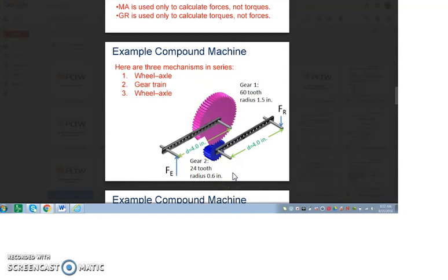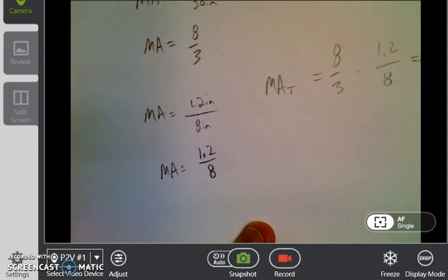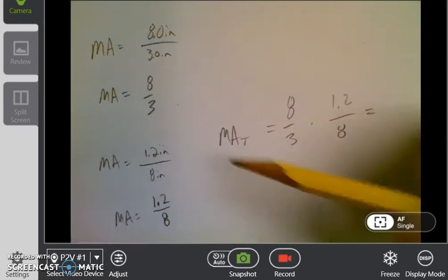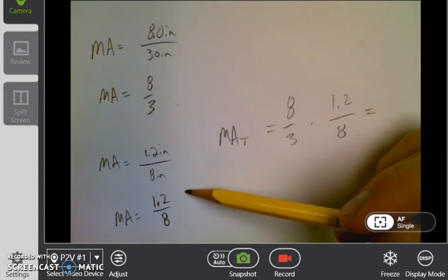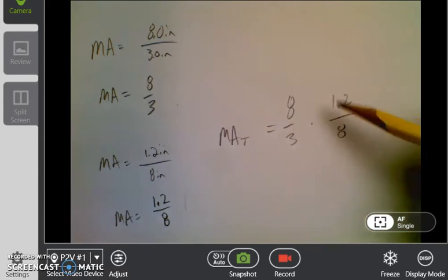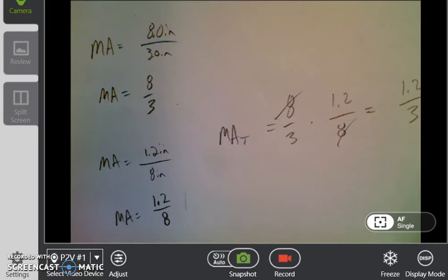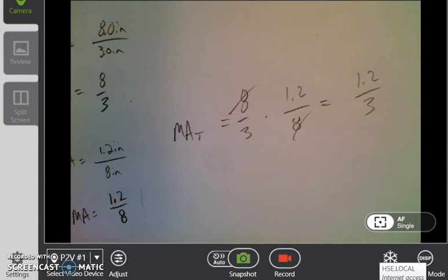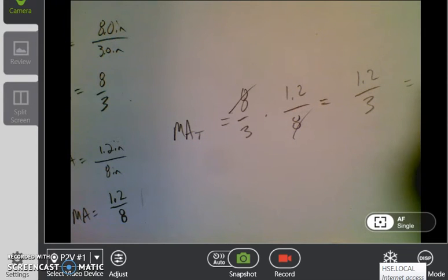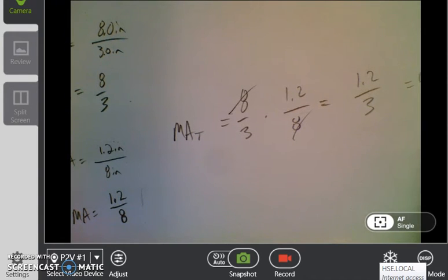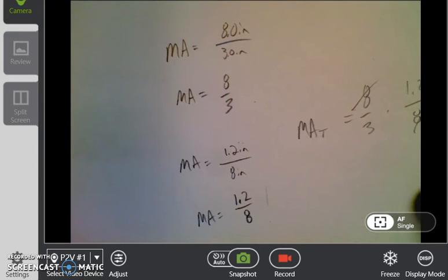And then when you find the compound machine, you're going to multiply those two together. So you have 8 thirds times 1.2 over 8. If I look at this here, here are my calculations: 8 thirds and then 1.2 over 8. The 8s will cancel, leaving you with 1.2 over 3, which if you take 1.2 divided by 3, you get a value of 0.4 for the mechanical advantage.